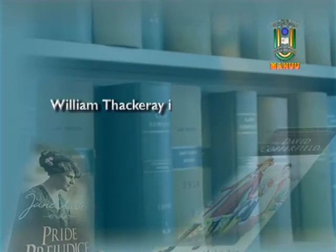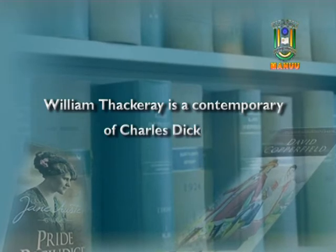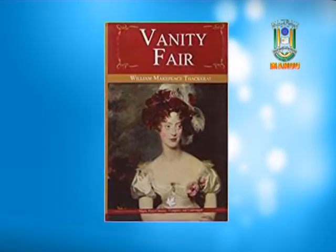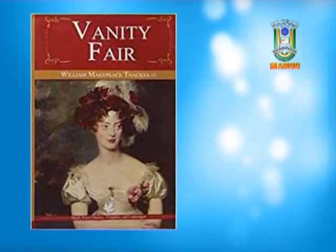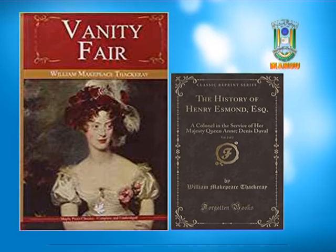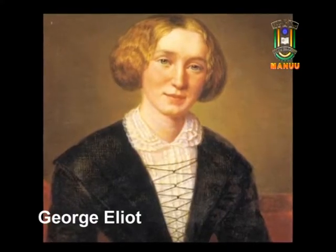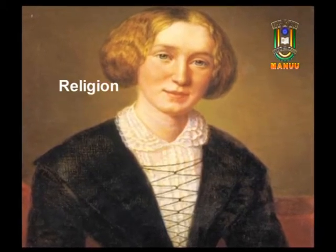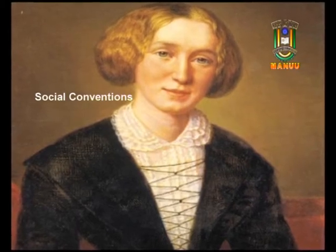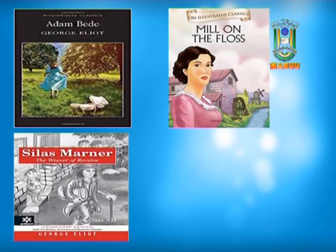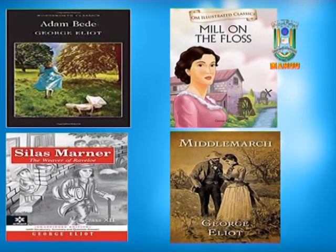William Thackeray is a contemporary of Charles Dickens and is famous for the novels of ideas. Vanity Fair is a masterpiece by him; he also wrote the historical novel Henry Esmond. George Eliot included philosophical issues in her novels, with religion, politics, and the social conventions of her times as subject matter. Adam Bede, The Mill on the Floss, Silas Marner, and Middlemarch are her representative novels.